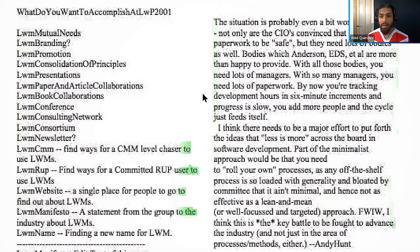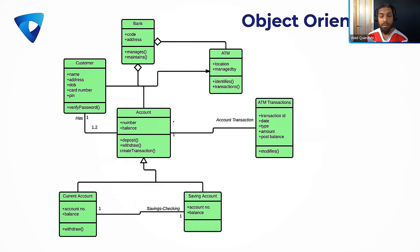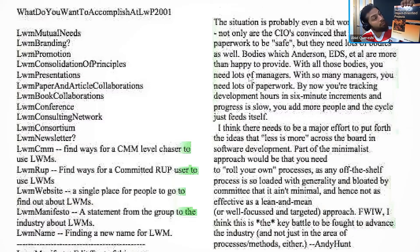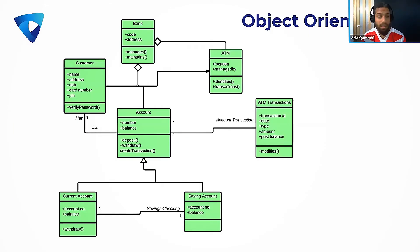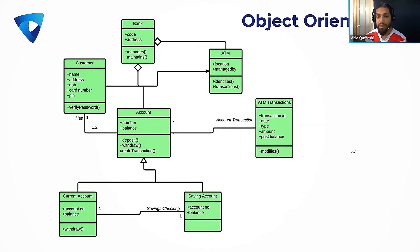One technology blew open the doors and freed people from heavyweight processes: object-oriented programming. This movement is actually a technical movement — not a project management fad. It was founded by developers working with OOP. Alistair Cockburn wrote a book called 'Surviving Object-Oriented Projects' — not 'programming,' but 'projects.' The technology has everything to do with how we do project governance.